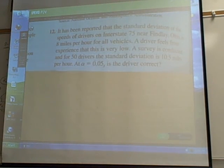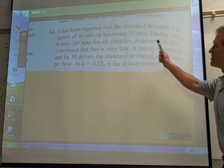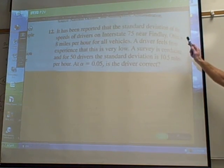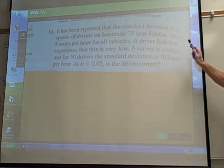Okay, this is an example of using the p-value method on Lesson 8.6. This problem comes from page 446 in your textbook. Here's a problem. It has been reported that the standard deviation of the speeds of drivers on Interstate 75 near Findlay, Ohio, is 8 miles per hour for all vehicles.